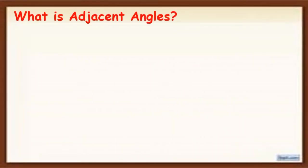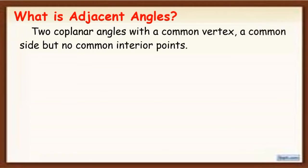So what are adjacent angles? Adjacent angles are two coplanar angles with a common vertex, a common side, but no common interior points.